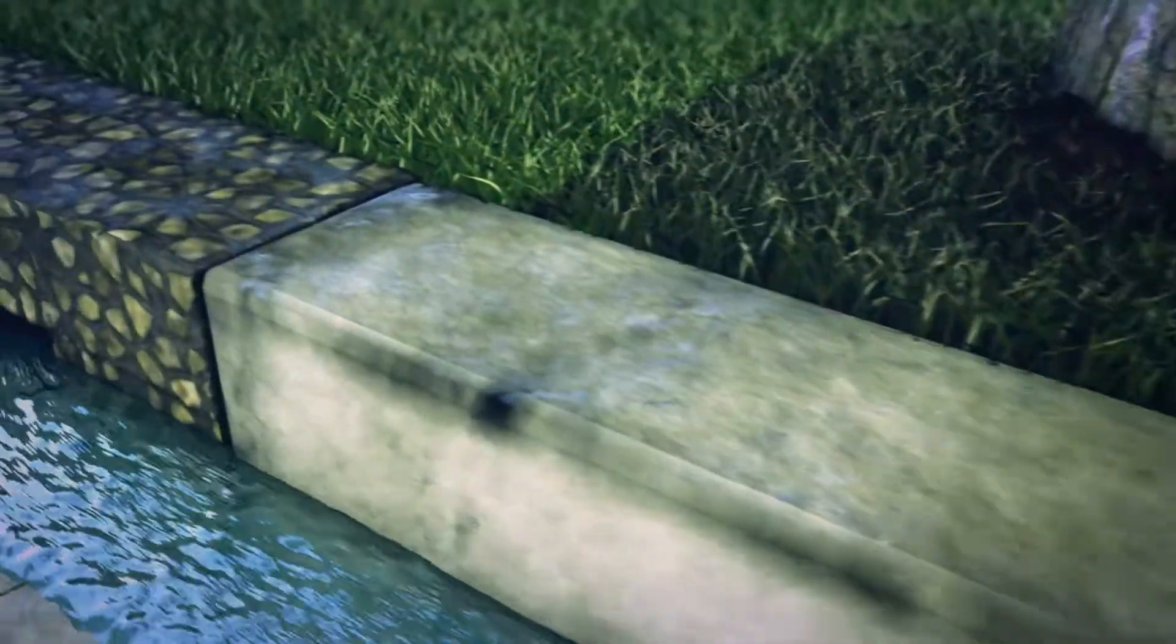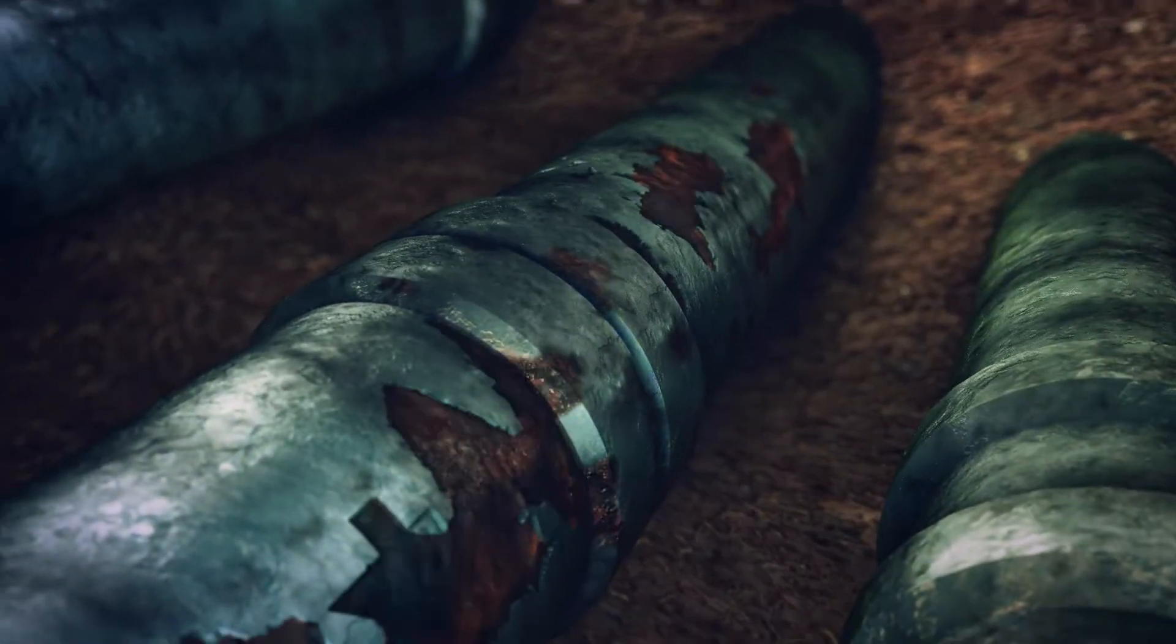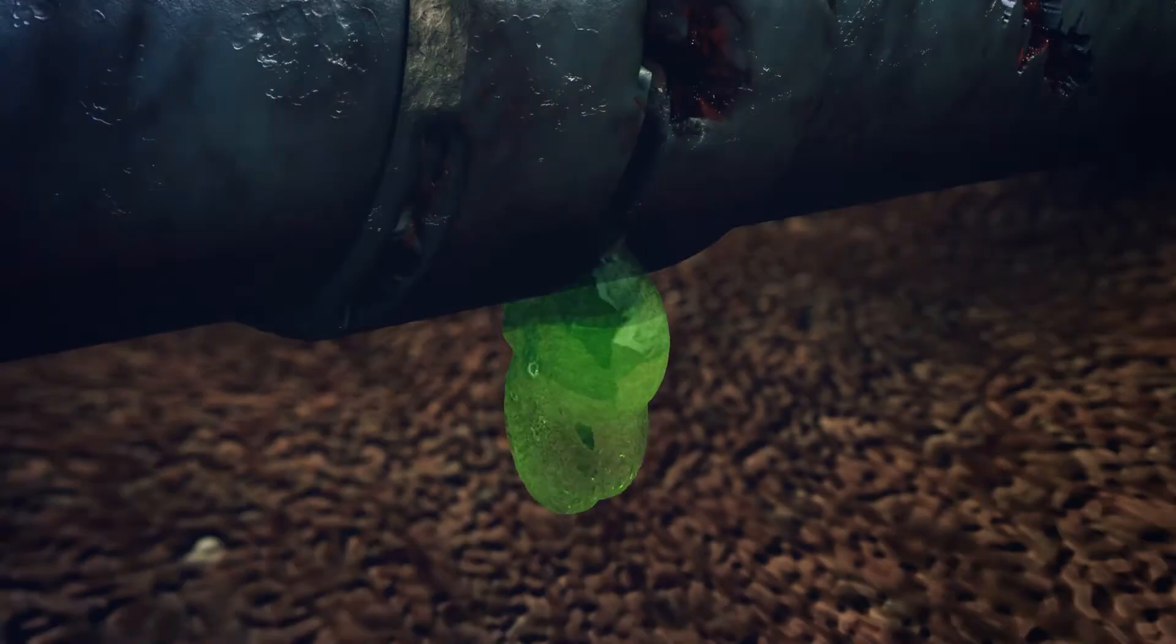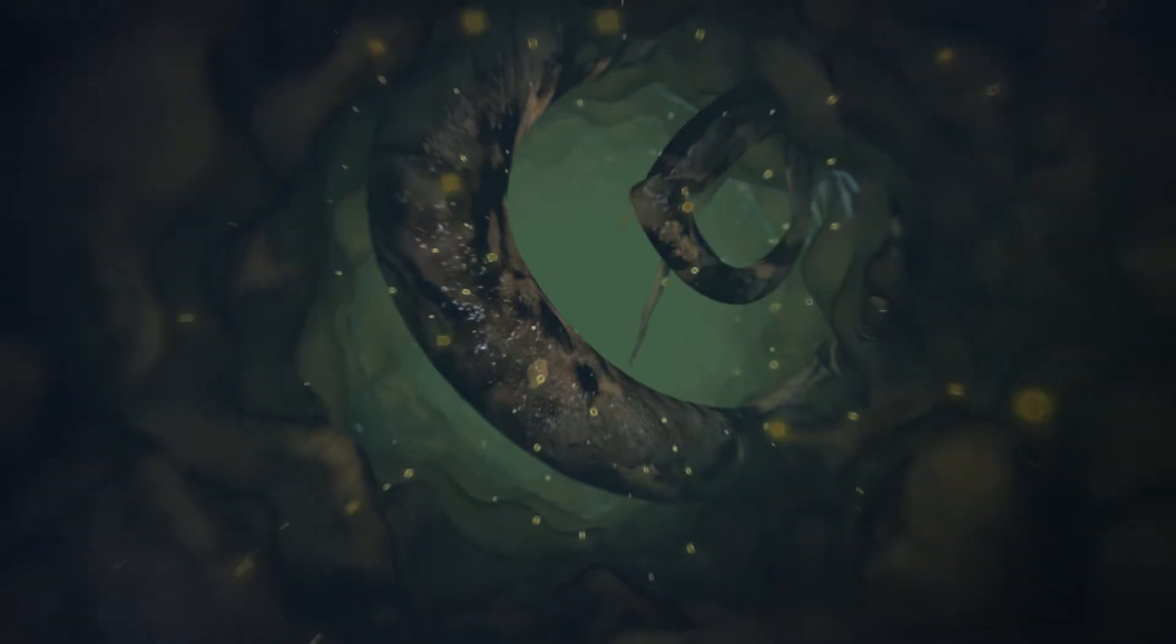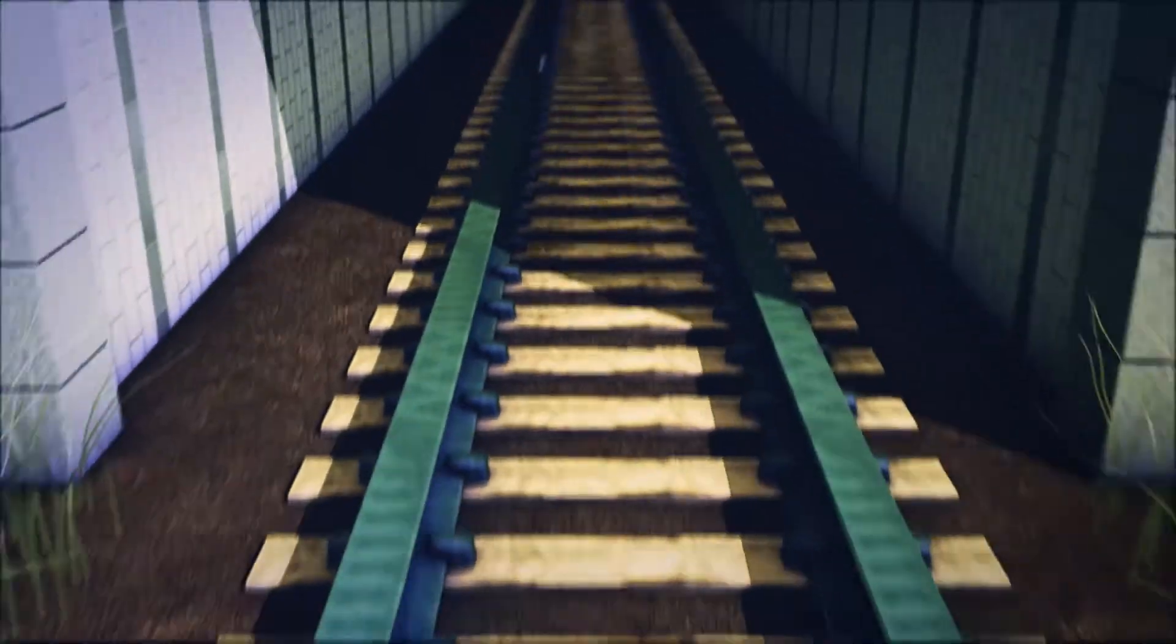As sanitary sewer and storm drainage lines age, they deteriorate, crack, and fail. This can cause leaks, root intrusion, and soil infiltration, leading to blockages, backups, and increased water treatment costs. Point repair solutions from Hammerhead Trenchless are a cost-effective, environmentally friendly method to structurally repair sections of pipe.